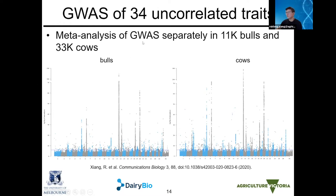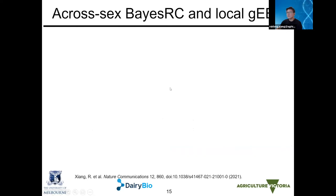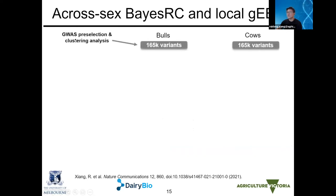Looking at the GWAS results: this is a meta-analysis using imputed sequence variants on our animals, separately in bulls and cows. Although there are many significant hits, and the significant hits come from almost similar regions, the individual exact SNPs between sexes are somewhat different. So we do a GWAS pre-selection and clustering analysis first to derive a set of variants to train in the Bayesian models — the cross-sex BayesRC approach. The detailed methods are in a paper published last year.